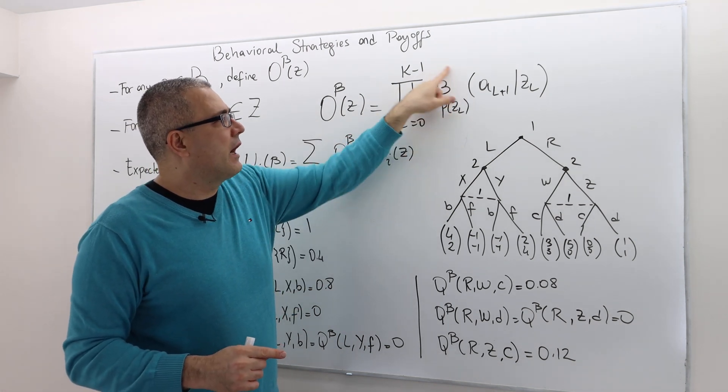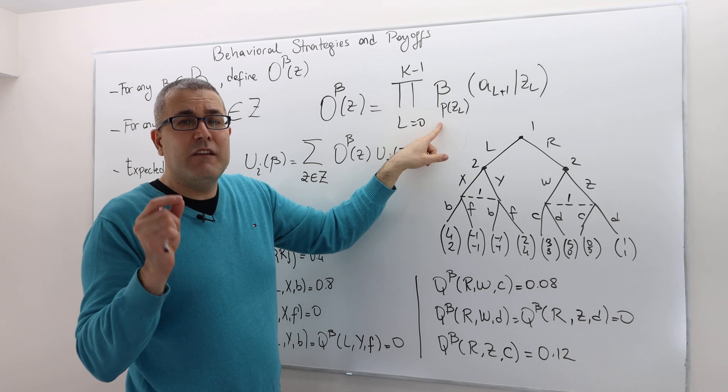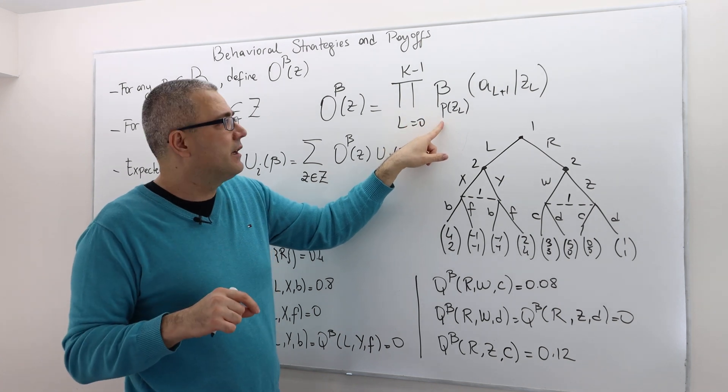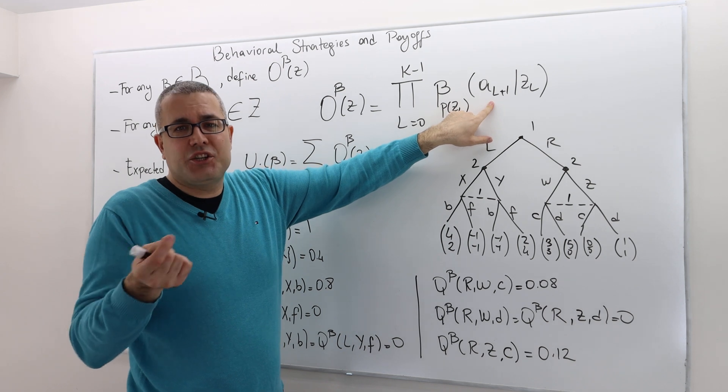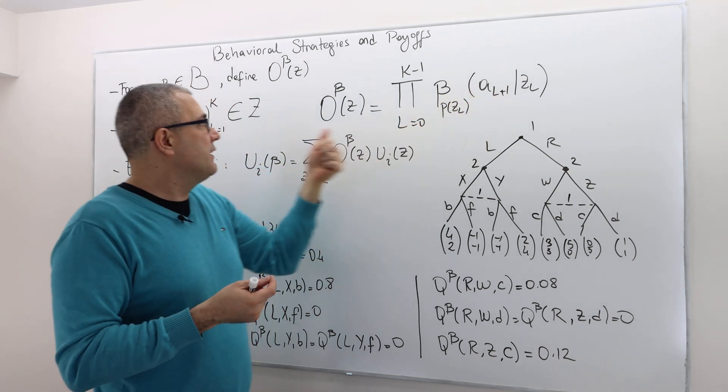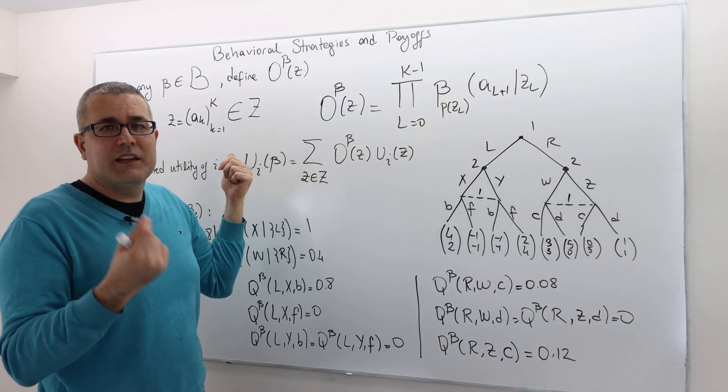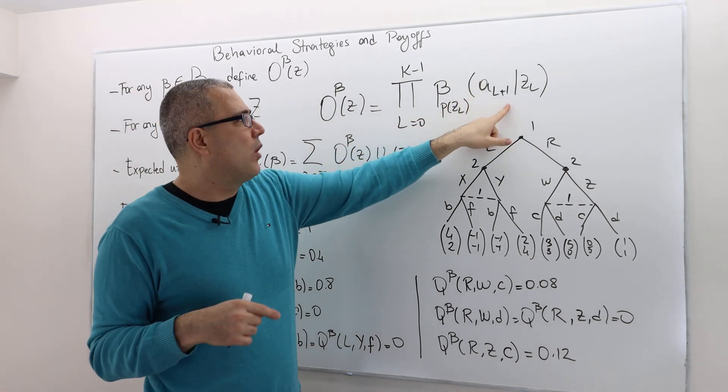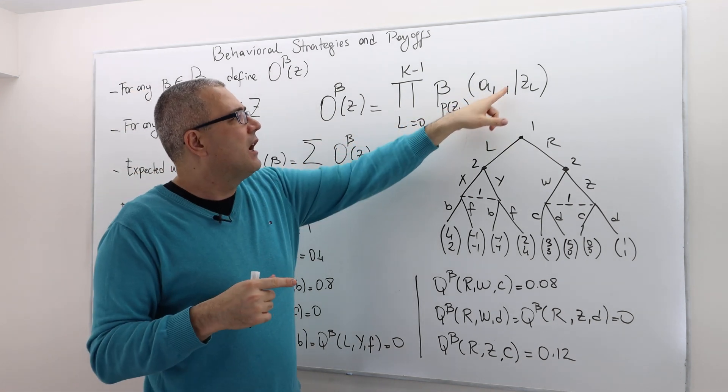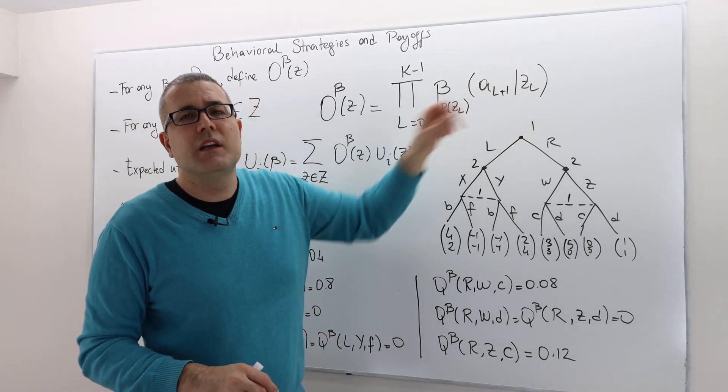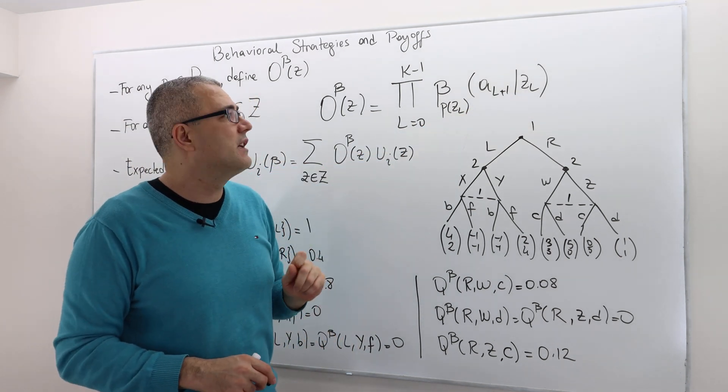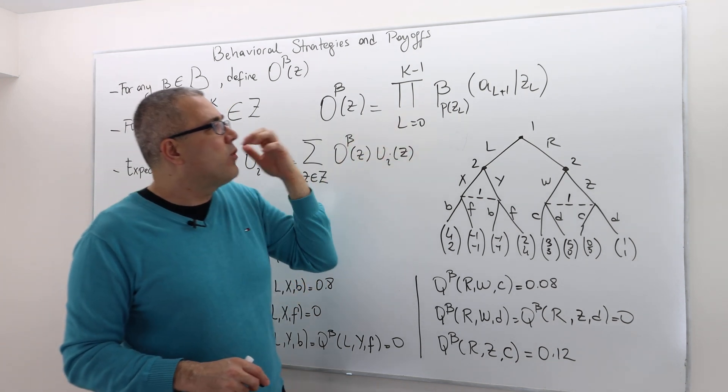Who is the player moving after that history? I am looking at the behavioral strategy of that player, of playing the action A, which is supposed to be played in this history Z. So A L plus 1, given that the history we're talking about is truncated history ZL.